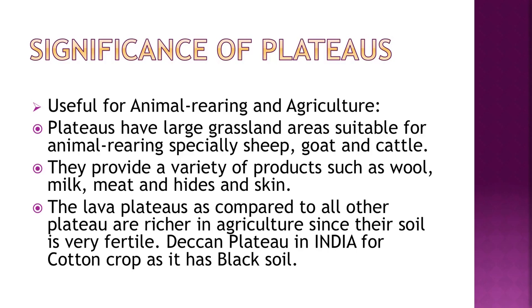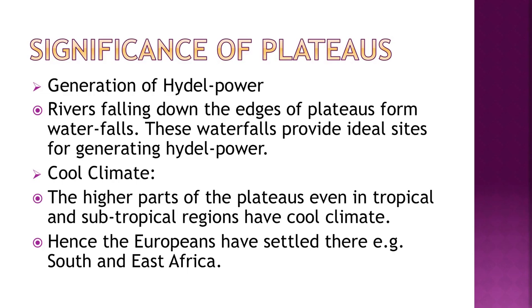Plateaus have large grassland areas suitable for animal rearing, especially sheep, goat and cattle, providing wool, milk, meat and hides. Lava plateaus are rich in agriculture since their soil is very fertile — the Deccan Plateau in India, for example, is famous for cotton crop because black soil is good for cotton.